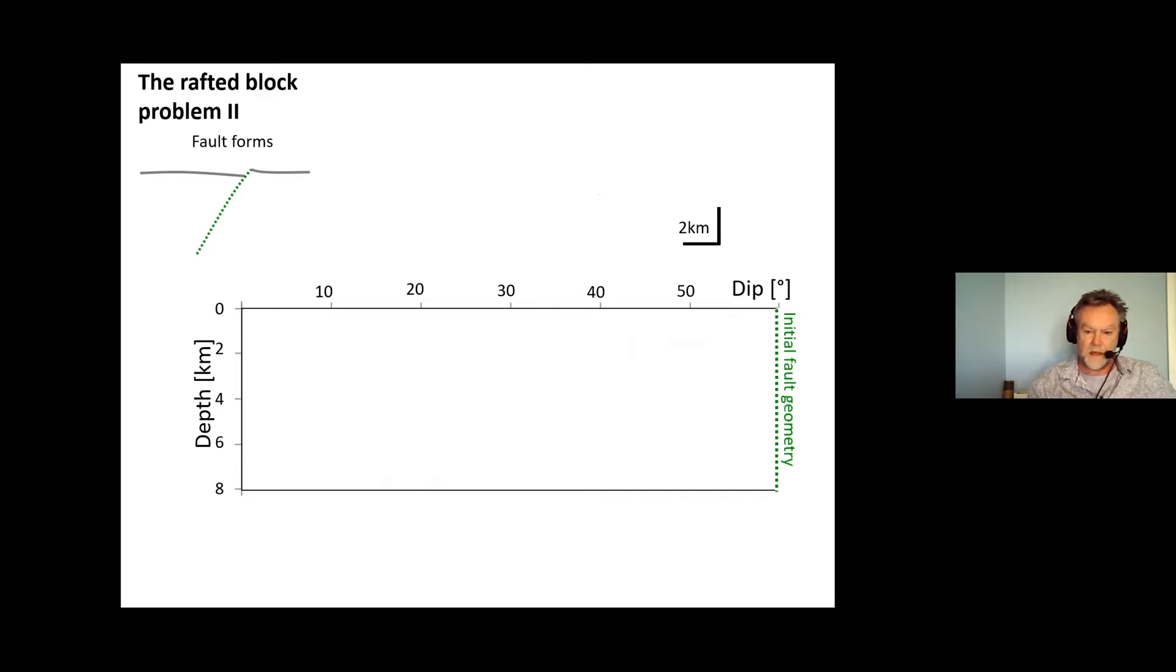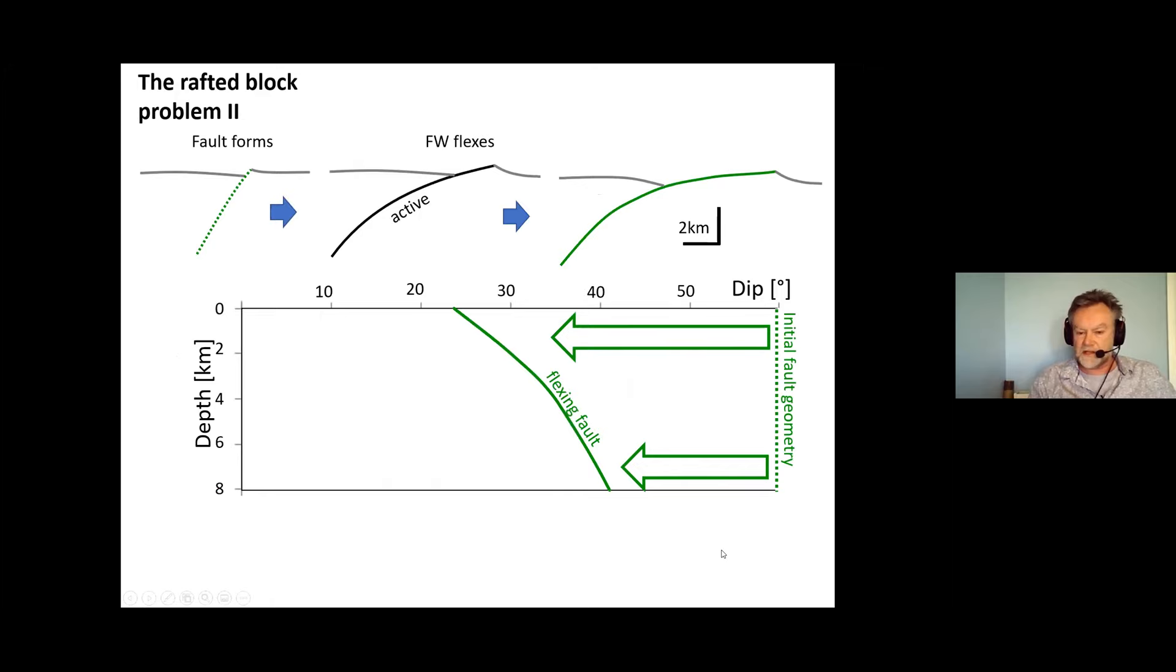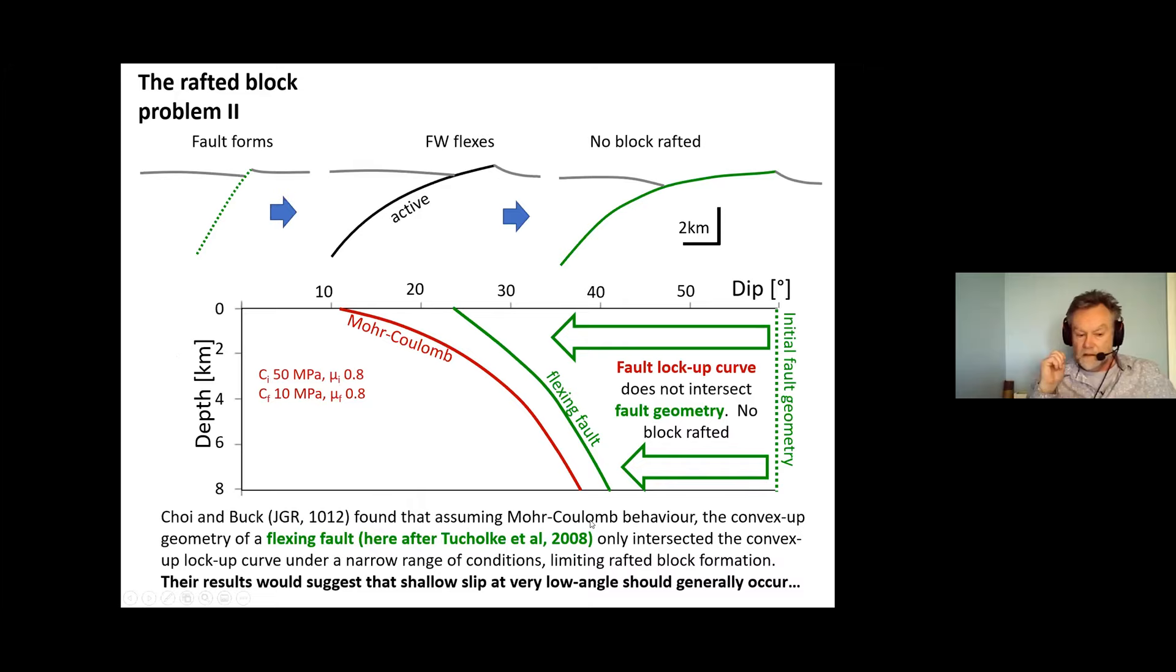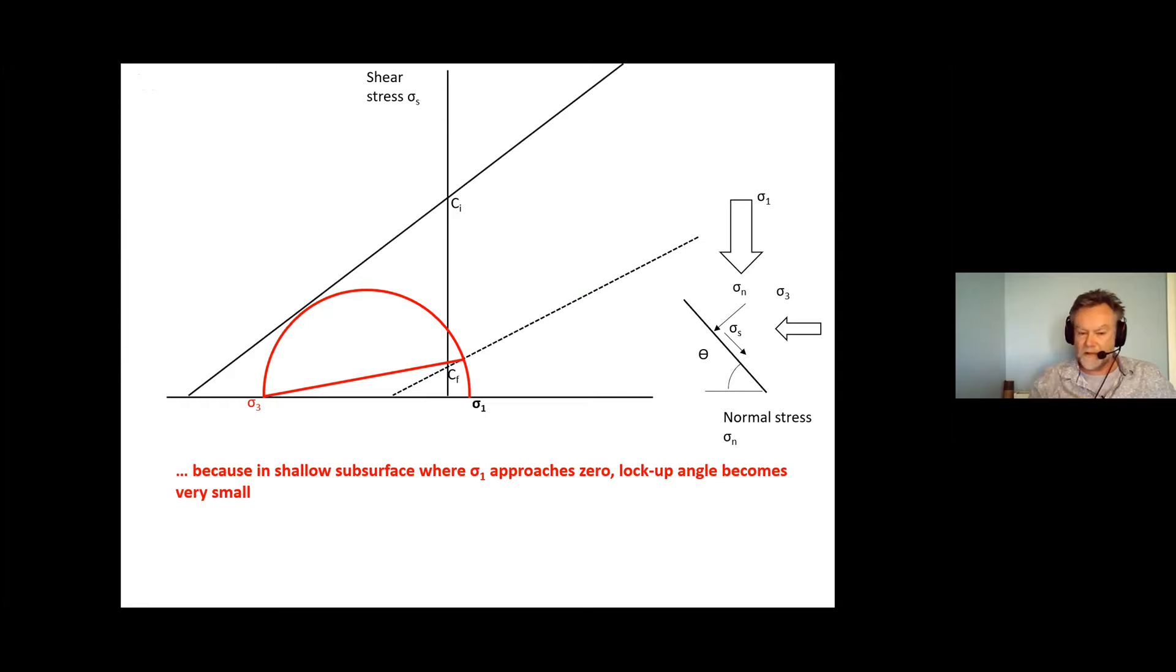And it suggests that low angle normal faults are not paradoxical. But the second problem arises and Choi and Buck also spotted this problem and that is that if you have a fault which can remain active at low angle when it gets close to the surface then the geometry of the flexing fault ends up never intersecting the lock up versus depth function under more Coulomb conditions. That basically limits the conditions under which rafted blocks might form. So their results would suggest shallow slip at very low angle should be the norm.